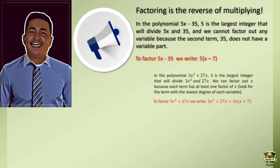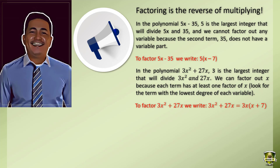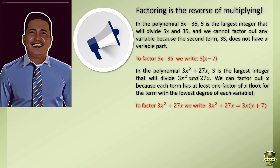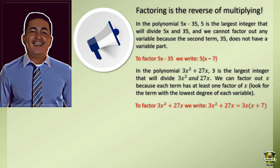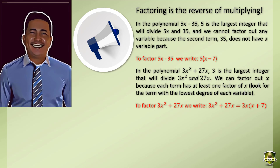In the polynomial 3x² plus 27x, 3 is the largest integer that will divide 3x² and 27x. We can factor out x because each term has at least one factor of x; look for the term with the lowest degree of each variable. To factor 3x² plus 27x, we write: 3x² plus 27x is equal to 3x times the quantity x plus 9.